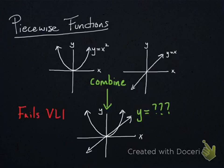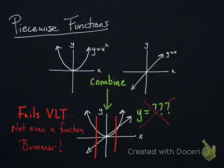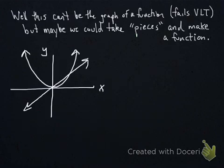Well hopefully you noticed that this fails the vertical line test, and so it can't even be the graph of a function, which means that we wouldn't be able to come up with this equation without any sort of ambiguity. Okay, so maybe this isn't the graph of a function, but perhaps we could take pieces of it that actually form a function.